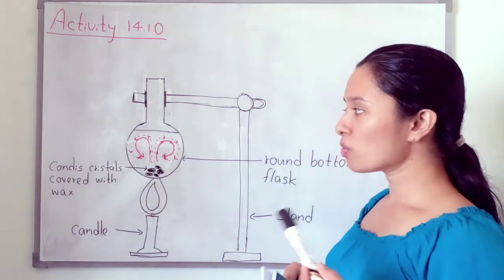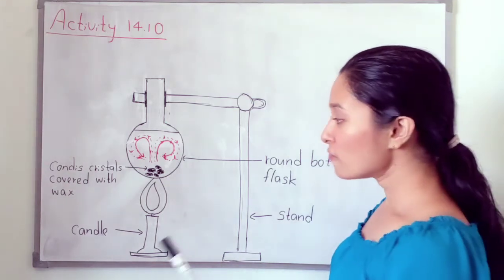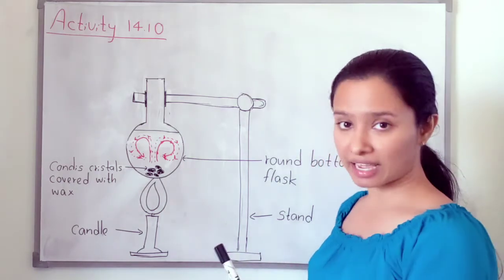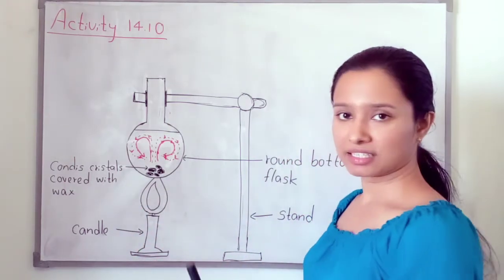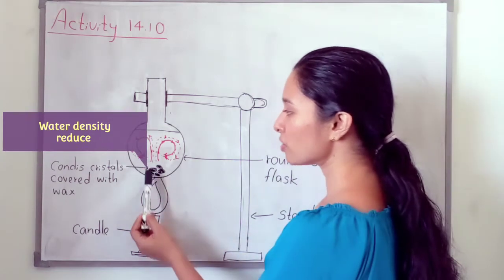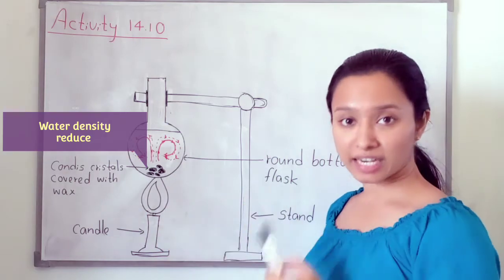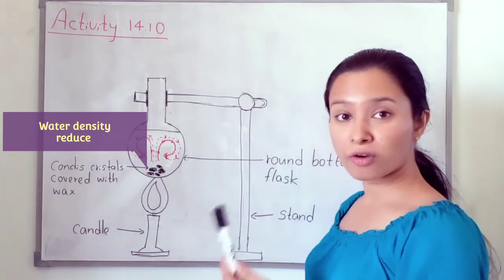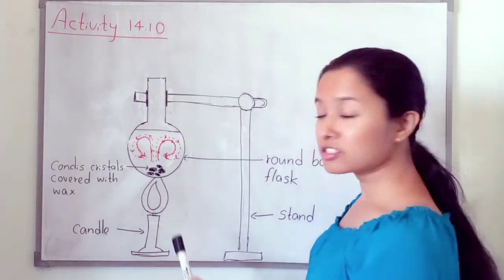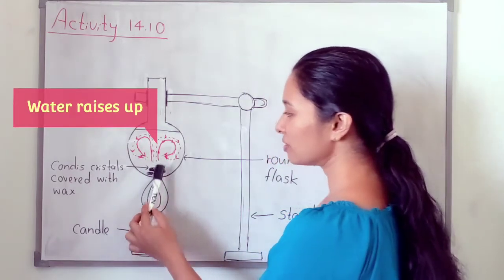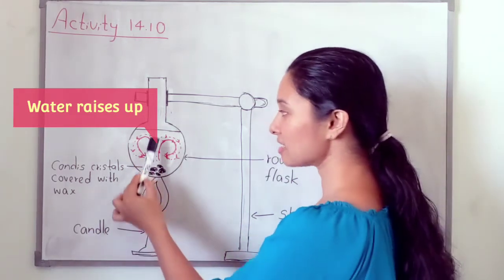So, what is the reason for this? We are heating the flask using the candle, so the water at the bottom of the flask gets heated up. Because of heating, the density of the water near the bottom reduces. Because of this reduction in density, the water at the bottom of the flask rises up — heated water rises up.